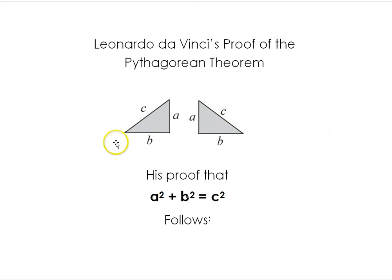So here we have two congruent triangles and they're just mirror images of one another. We're going to show the way Leonardo did that a² + b² equals c².